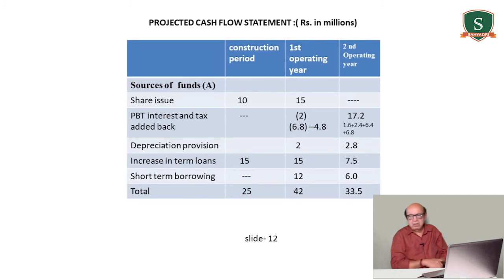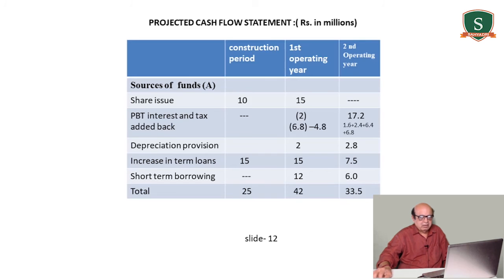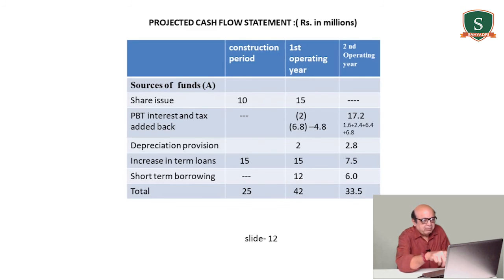Second operating year sources: profit before interest and tax added back is 17.2 — calculated as profit after tax 1.6, plus tax 2.4, plus loss written off 6.8, plus interest 6.4. The loss of 6.8 is added back because the company effectively earned 1.6 after absorbing that old loss, meaning total profit generated was higher. Depreciation provision 2.8. Increase in term loan and short-term borrowing 6. Total sources: 33.5.